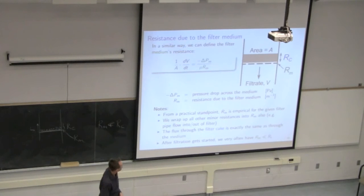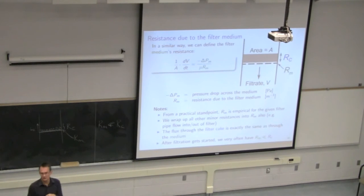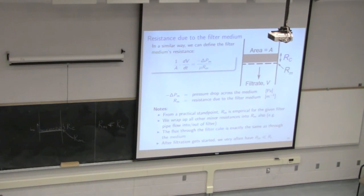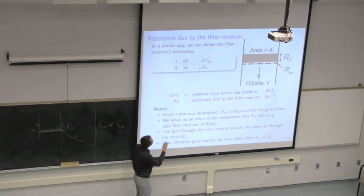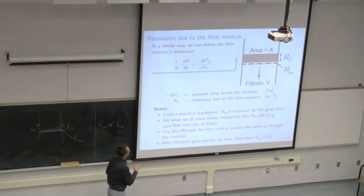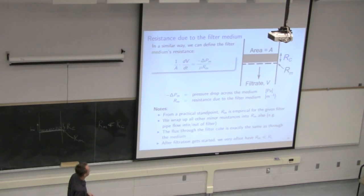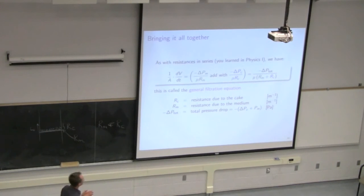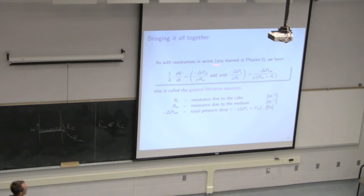We also stated that for the resistance due to the medium, we can write a similar equation: the pressure drop over the medium is a function of the filter cloth's resistance RM. RM is empirical for a given filter medium — not something we can predict from first principles. For certain manufacturers' media that we purchase, we will experience some pressure drop over it, fairly negligible. The same flux that passes through the cake must pass through the medium, so the left-hand side term dV/dt divided by area is the same.